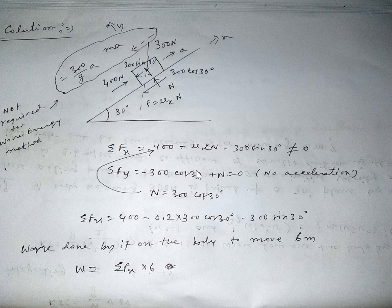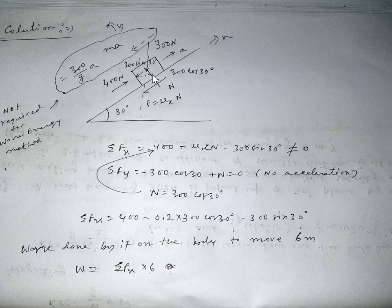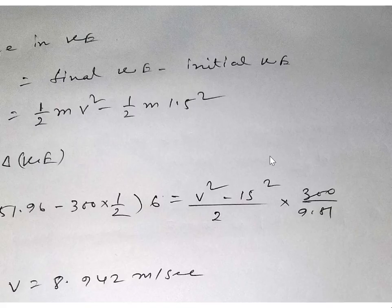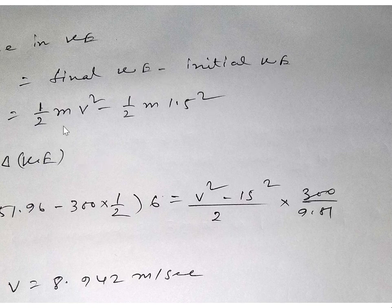Summing forces in the y-direction gives zero (no acceleration in y), allowing us to find N. The total external work done along x equals the sum of x-direction forces multiplied by the displacement of 6 m. Setting this equal to the change in kinetic energy — where initial velocity is 1.5 m/s and final velocity is unknown — we can solve to find the final velocity.